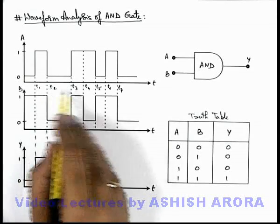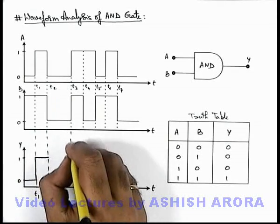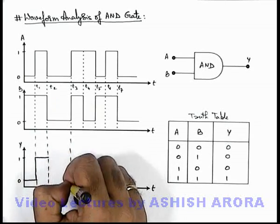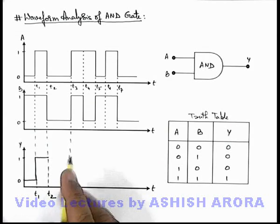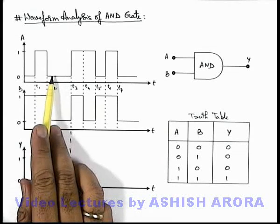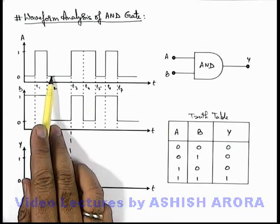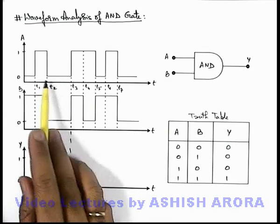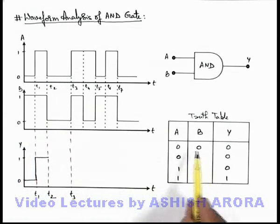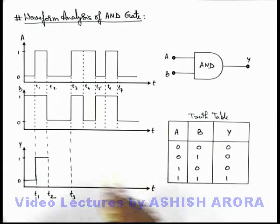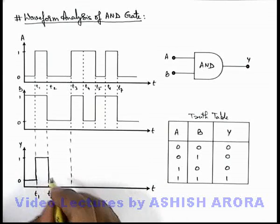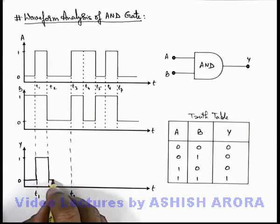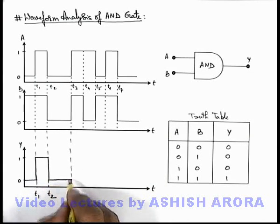From time instant t2 to t3, here you can see both the signals at input A and B are in zero state. So if both are zero, the output will also be zero, so it will again drop back to zero state.